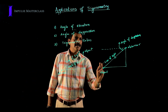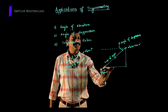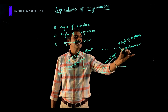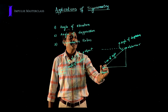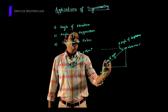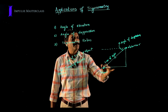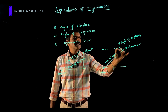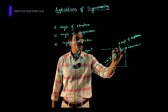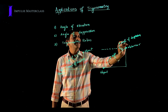Now have a look at angle of depression. Here the object is below and the observer is at the top. The observer is looking at the object from top to bottom. If you draw a horizontal line through the observer, the angle between this horizontal line and the line of sight is called the angle of depression.